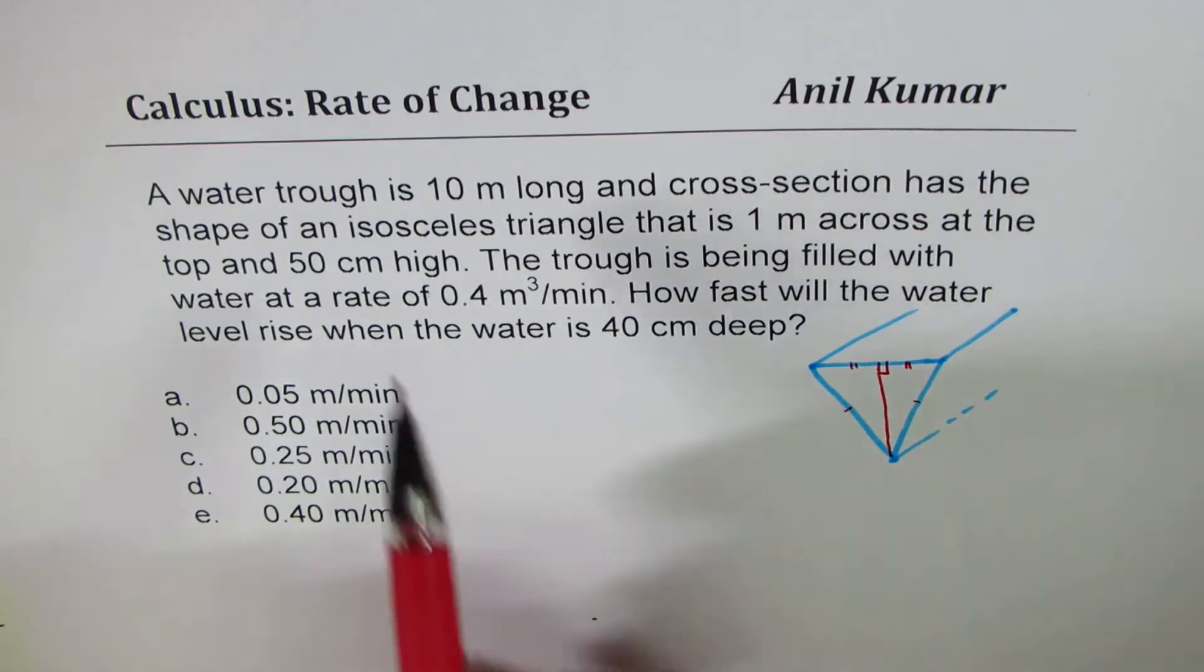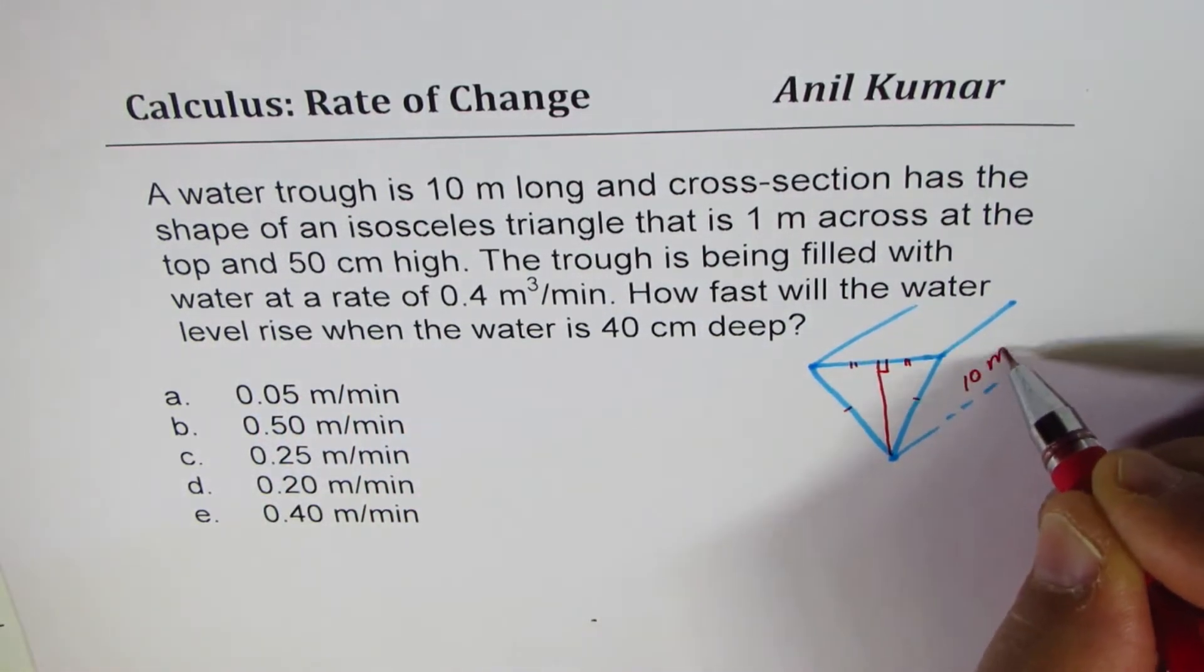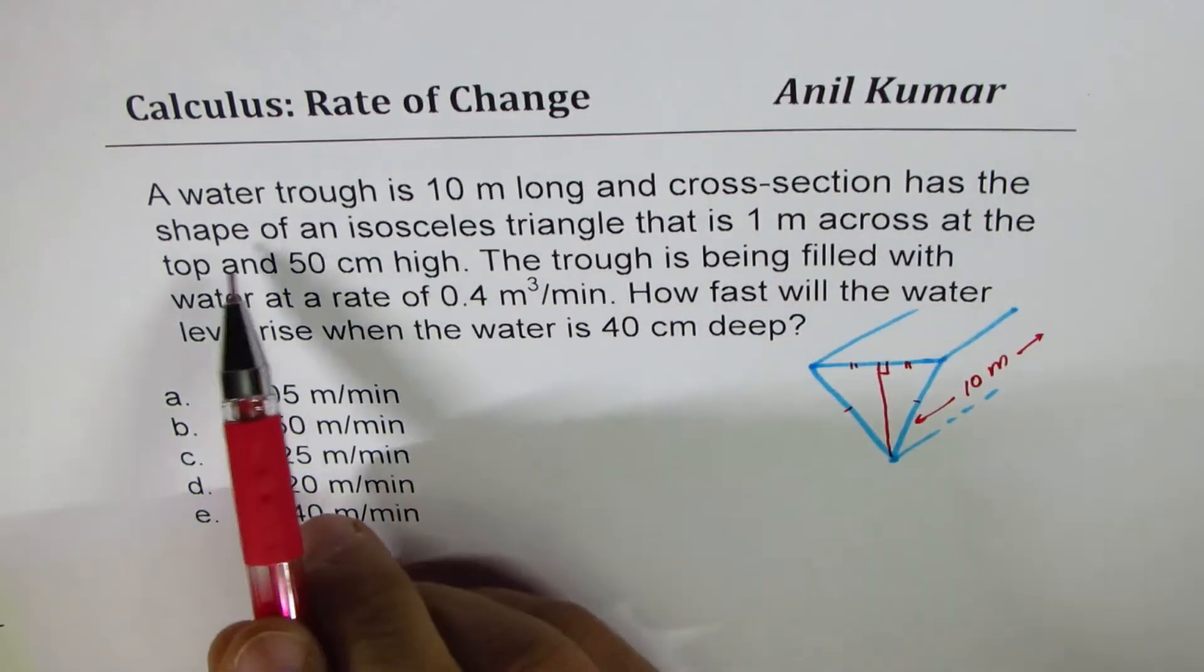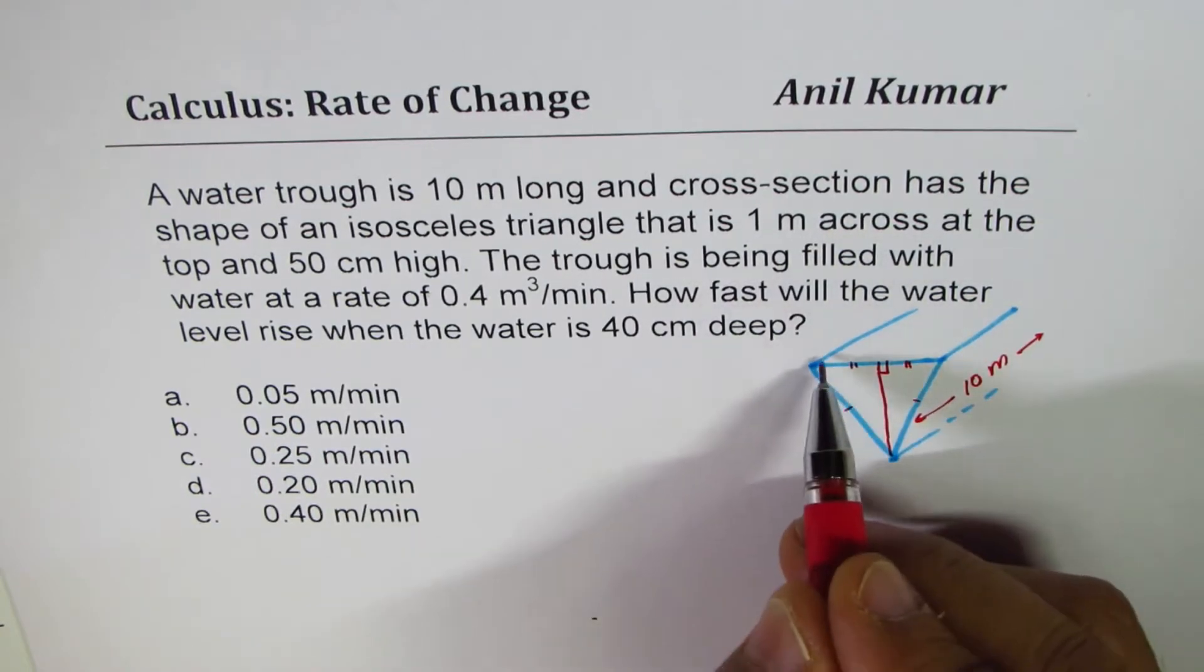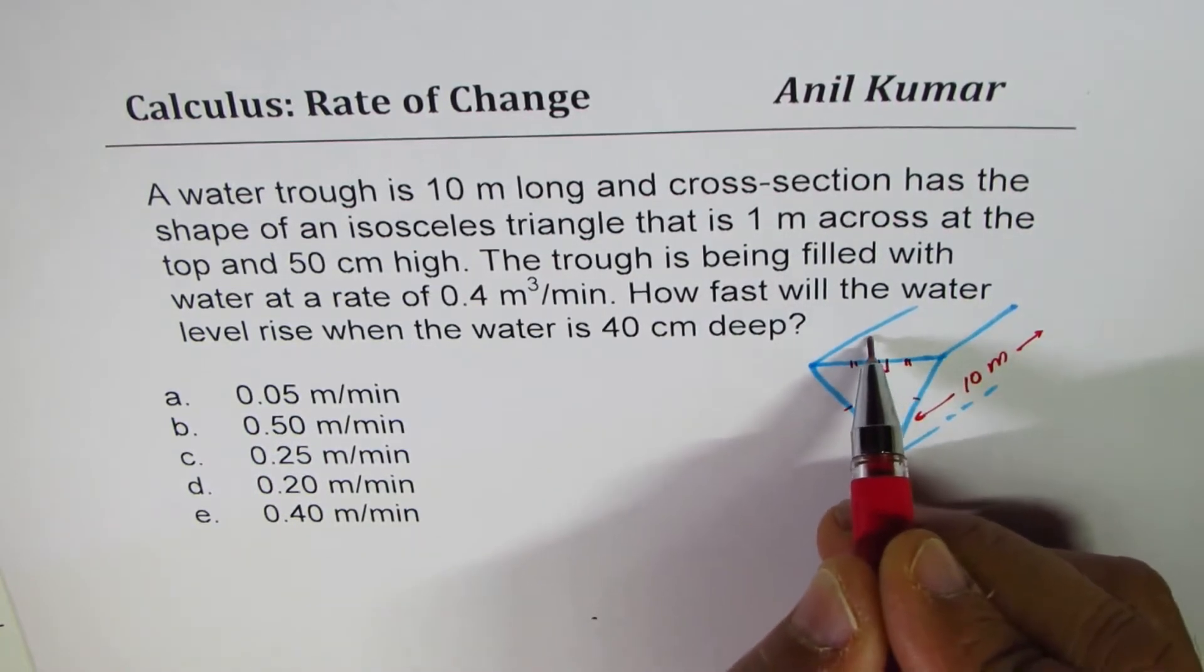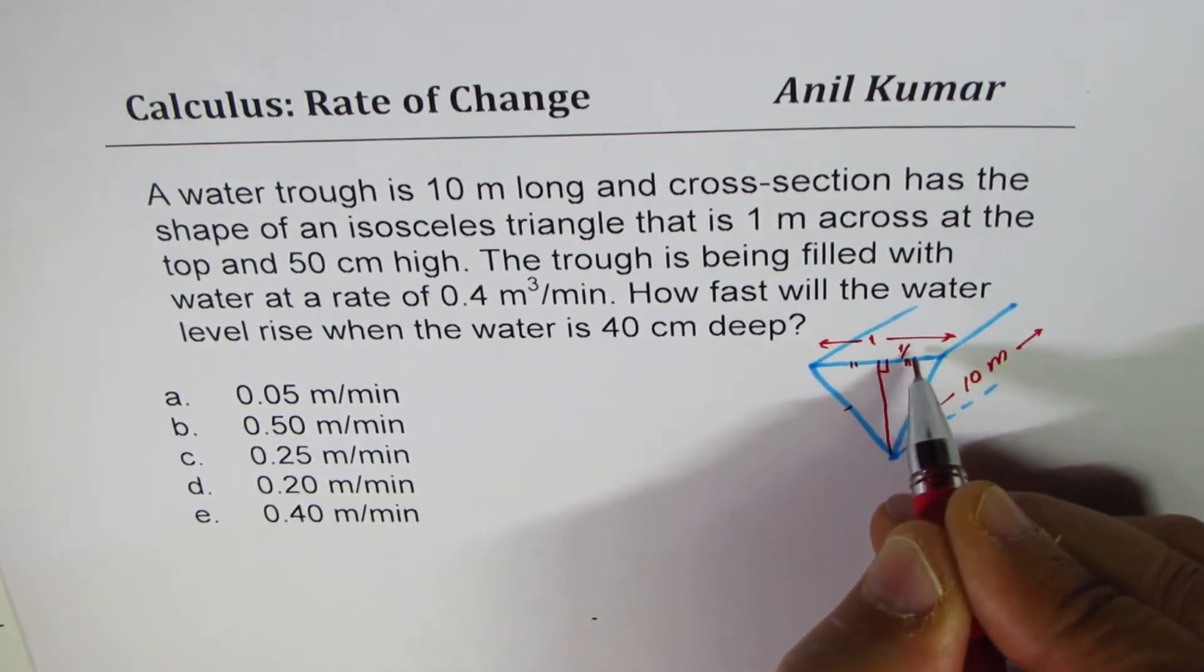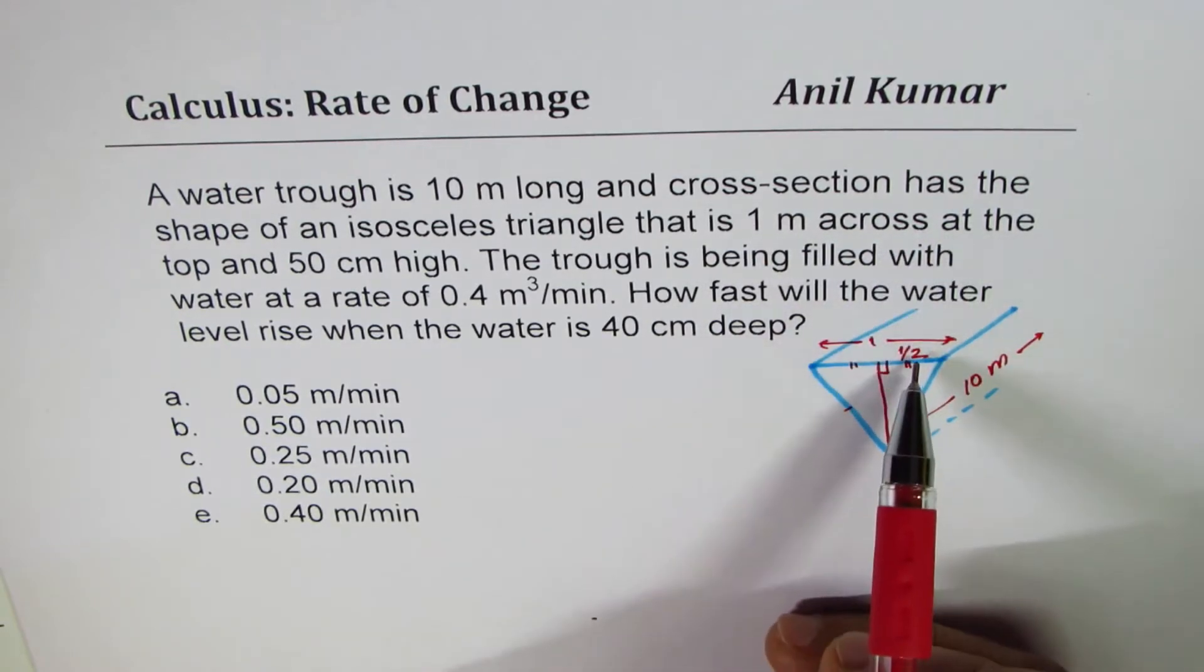So what we are given here is that the length is 10 meters. So this is 10 meters. Shape of isosceles triangle that is 1 meter across. So the total length is 1 meter. So this is 1 meter across. So 1 half will be the other side. 1 meter across, that is 0.5 meters.